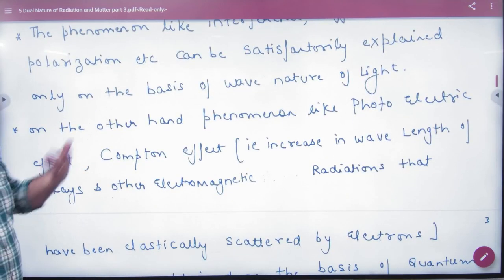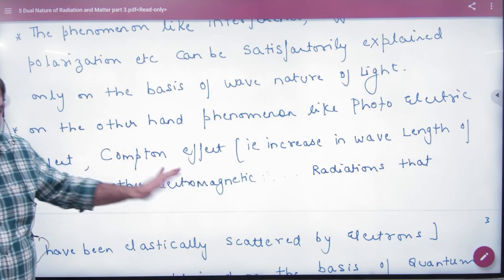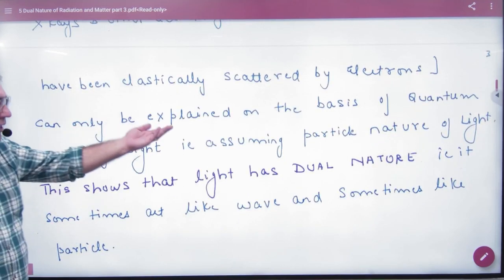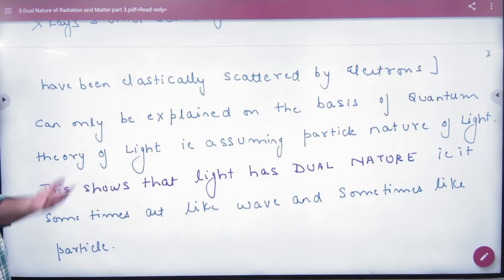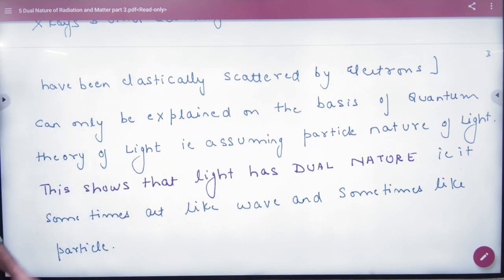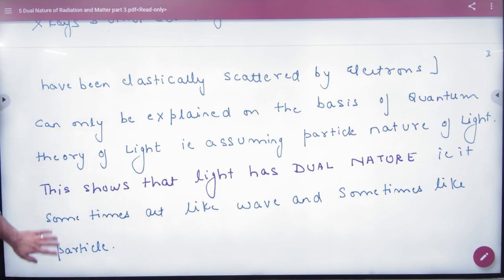phenomena like photoelectric effect and Compton effect can be explained on the quantum theory of light, which means that light has particle nature. So that's why light has dual nature.